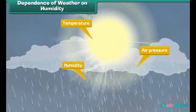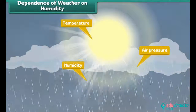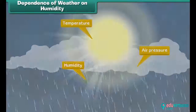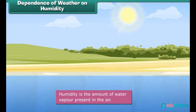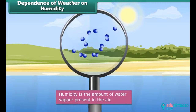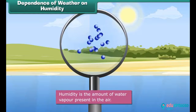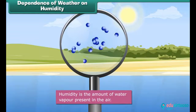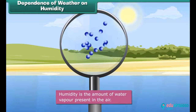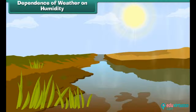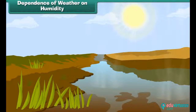Another important factor influencing weather is humidity. Humidity is the amount of water vapor present in the air. The air around us is full of water. You can usually see water evaporating from lakes, oceans, rivers, and even from trees.